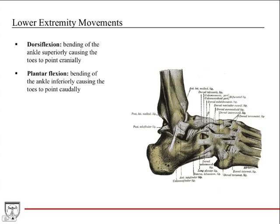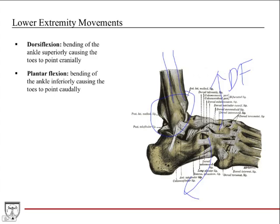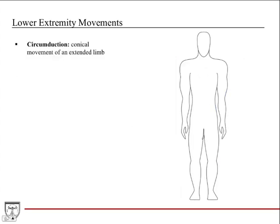To finish the movement section, we'll cover dorsiflexion and plantarflexion, which are movements at the ankle joint — the tibia and fibula articulating with the foot bones. Dorsiflexion is bending the ankle superiorly, causing the toes to point cranially or upward. Plantarflexion is pointing downward, bending the ankle downwards, pointing the toes caudally — like taking that first step off. Circumduction is a unique movement involving the entire lower extremity extended in a circular rotation, with your foot moving in a circle.